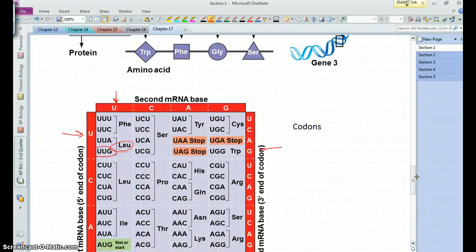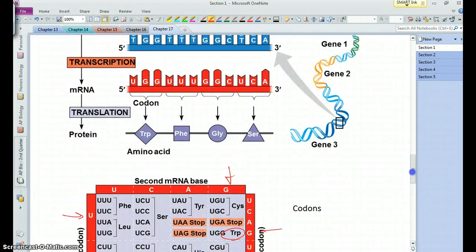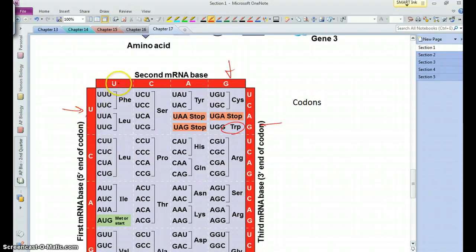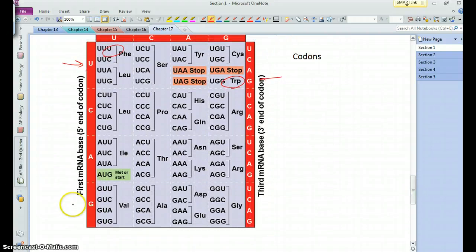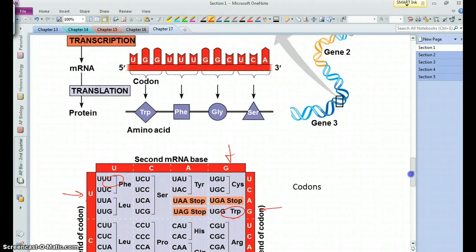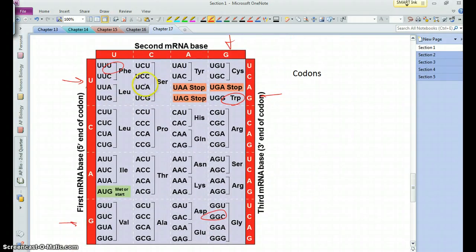Then UUU - U, U, U - is phenylalanine. And then GGC, so around here G, G, C is glycine. And UCA is going to be serine. So essentially, look at the first, second, and third bases in the codon, and use the genetic code and you can figure out which amino acid goes in which spot.